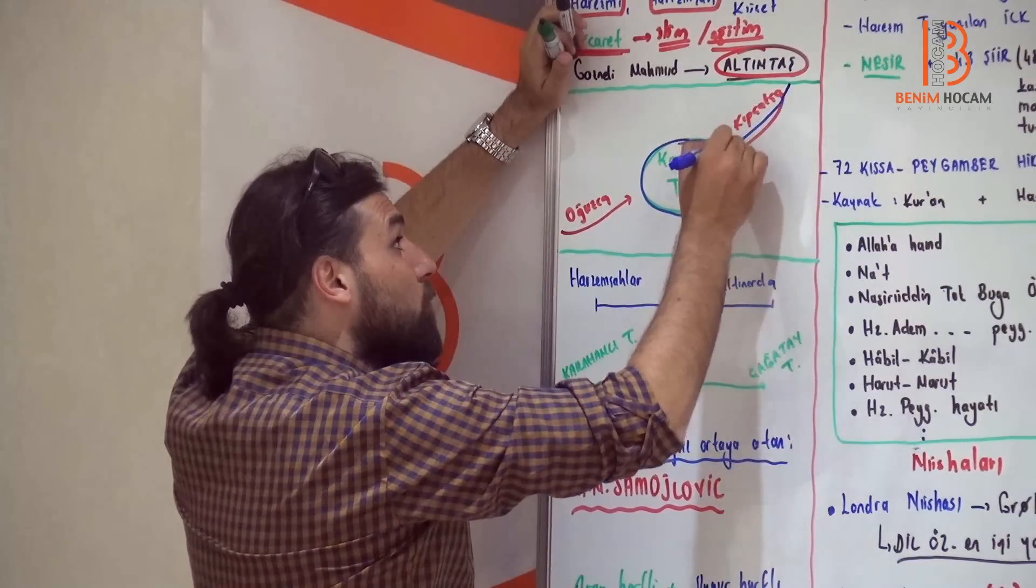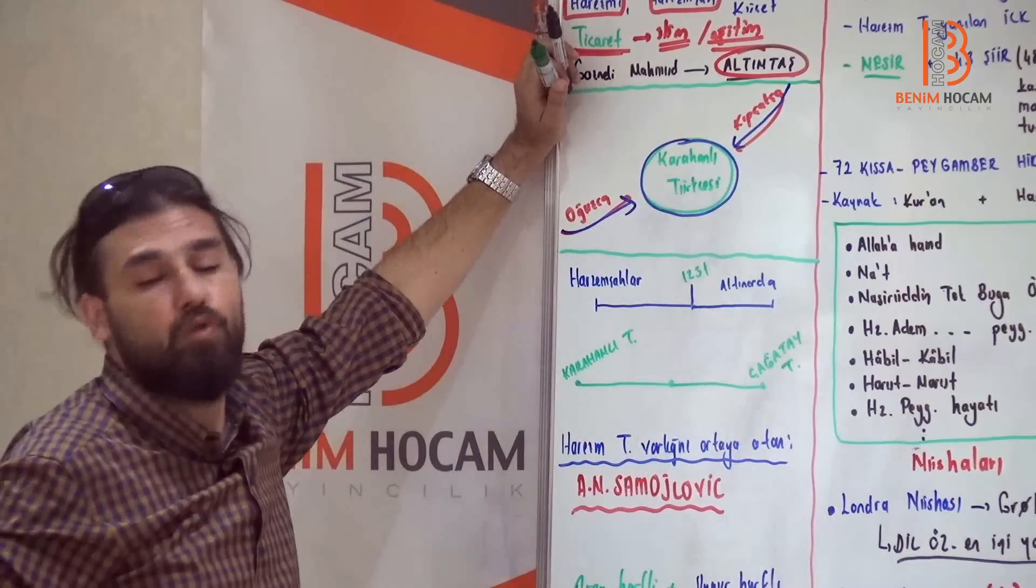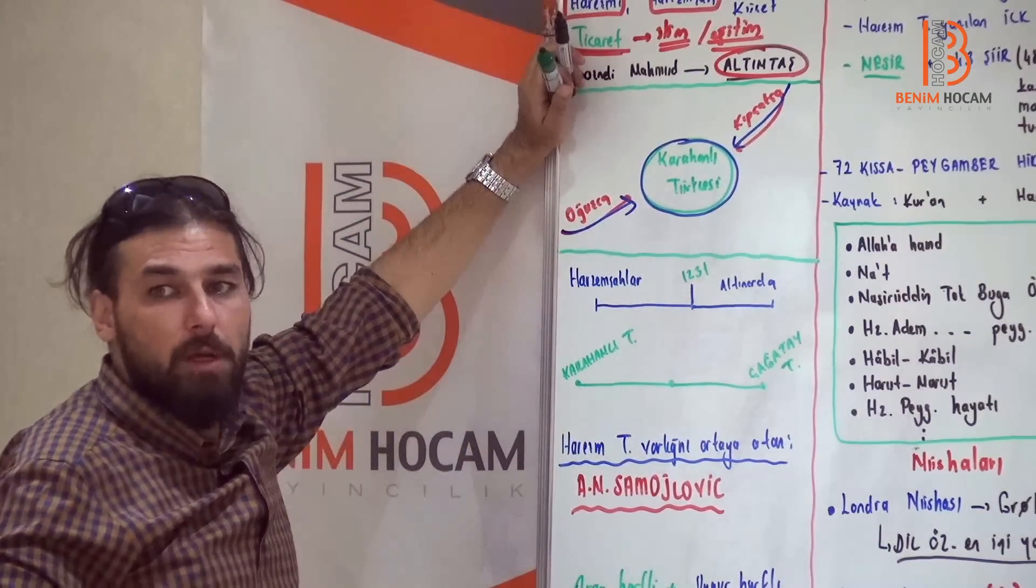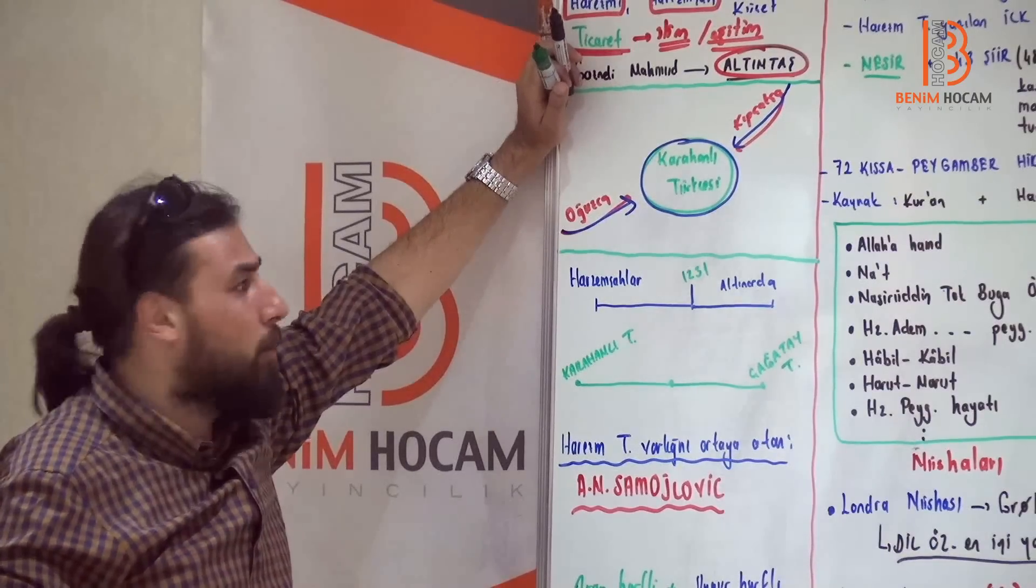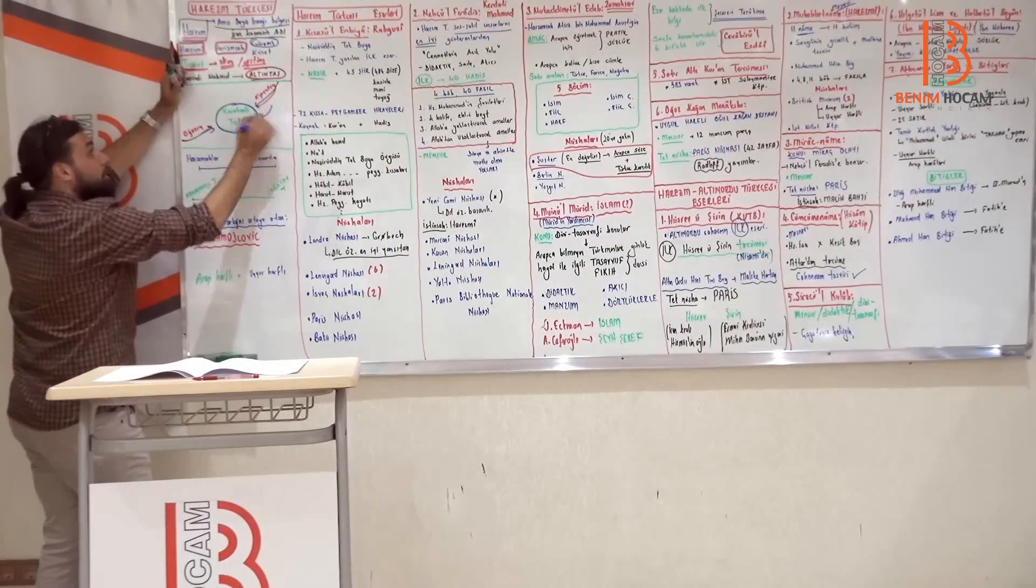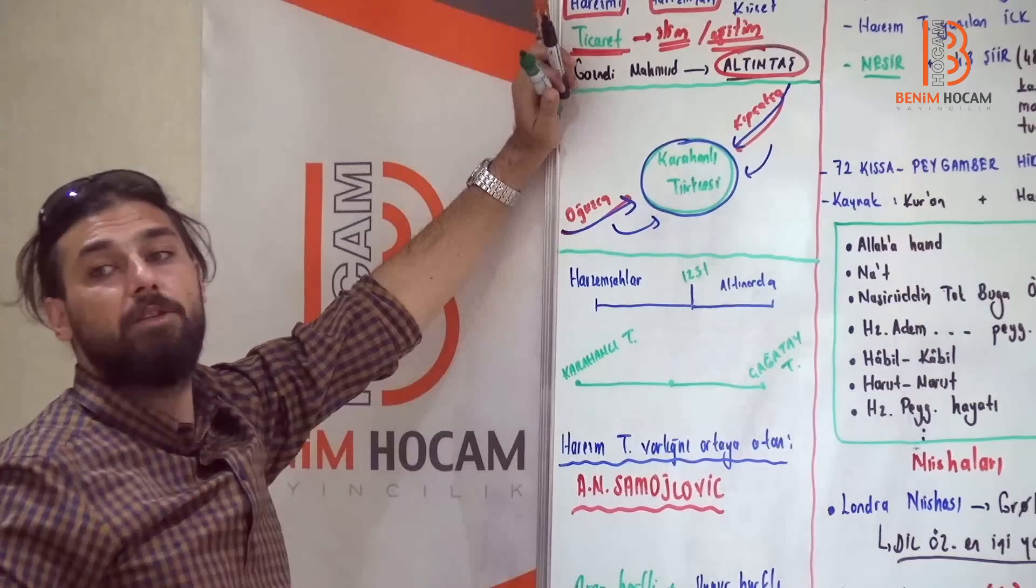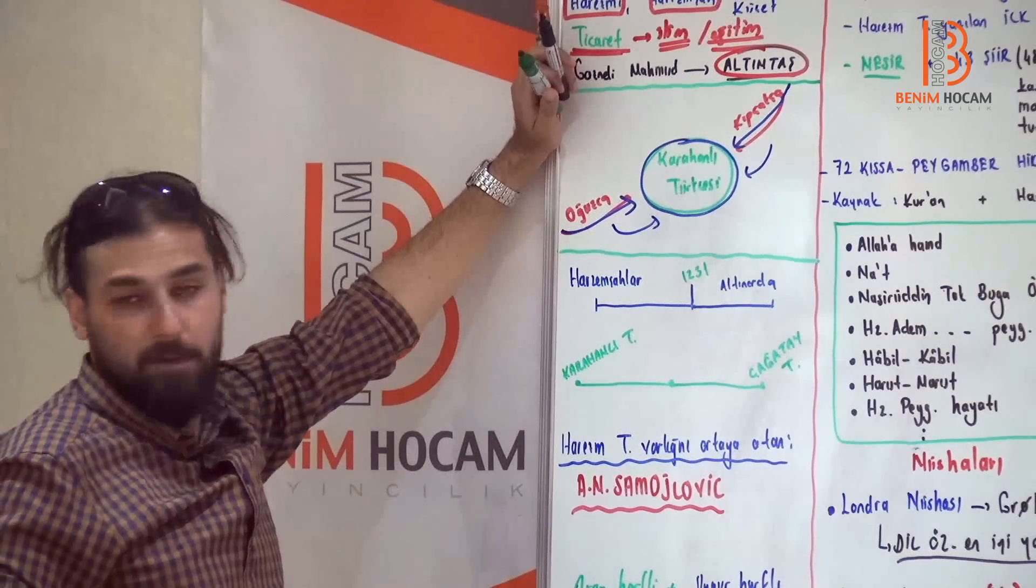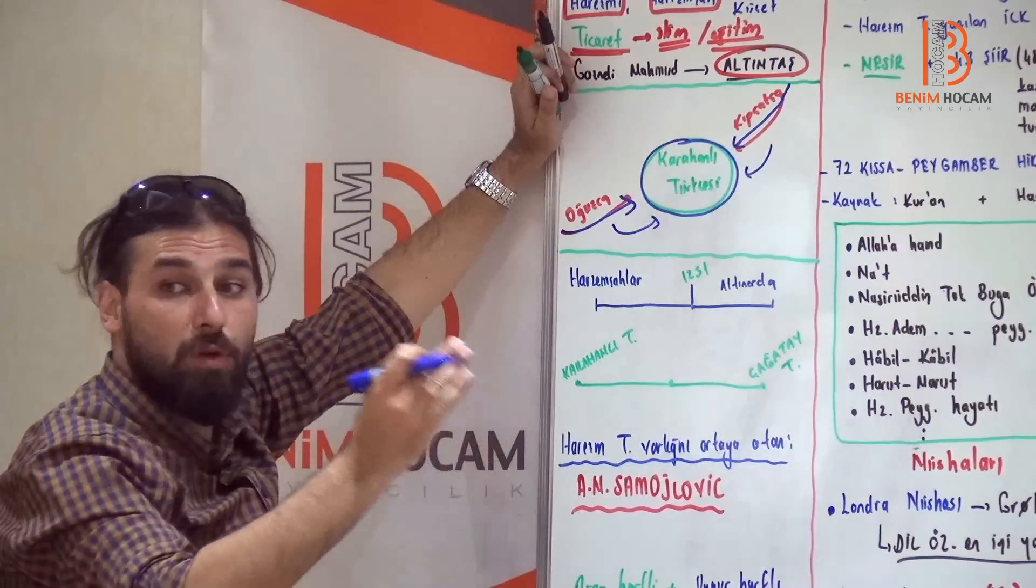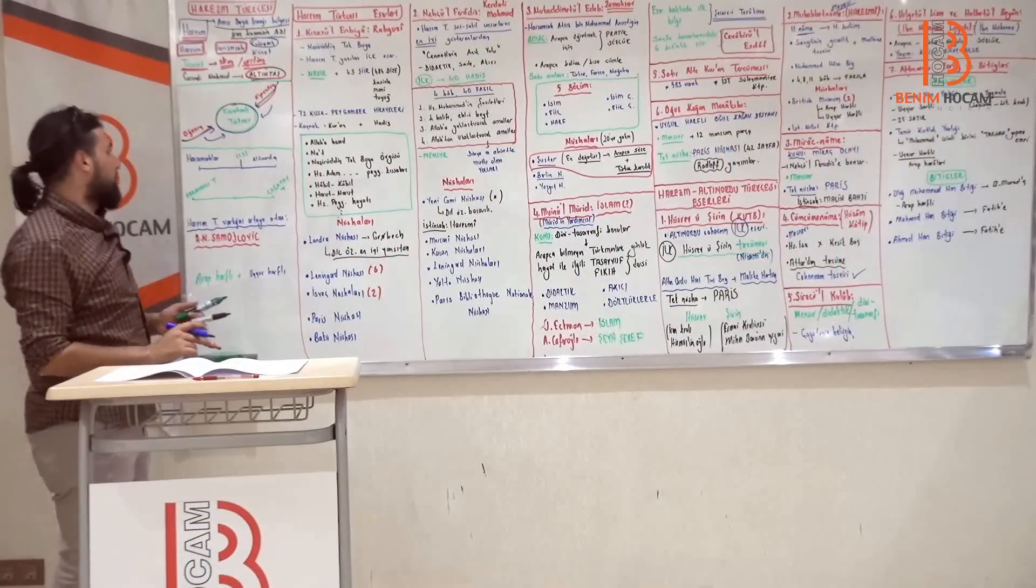Bir taraftan Kıpçak unsurlar, bir taraftan da Oğuzcu unsurların Karahanlı Türkçesine biraz daha etkilemesiyle oluşur. Yani Karahanlı Türkçesinden benziyor mu? Benziyor. O zaman temel nereye üzerine kurulmuş? Karahanlı Türkçesi. Peki bunun yanında Kıpçak unsurları var mı? Var. Oğuz unsurları var mı? Var.